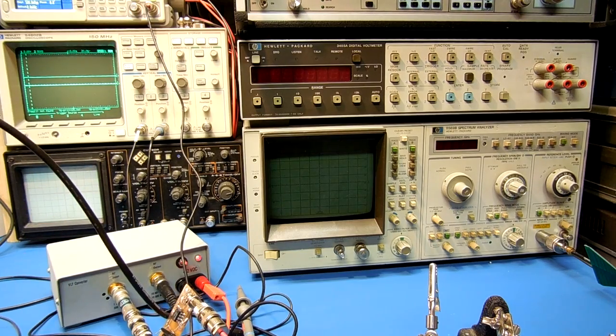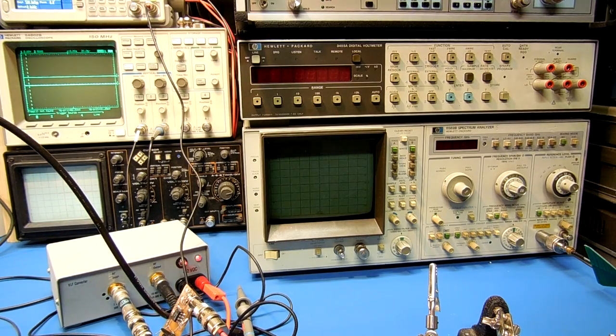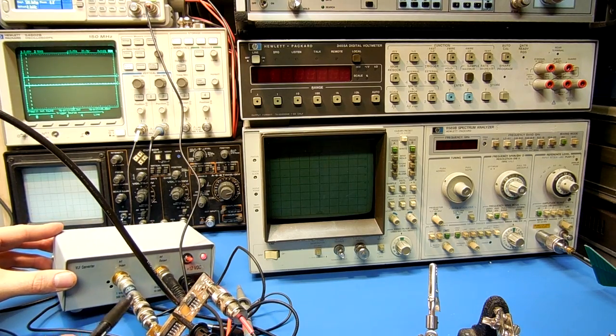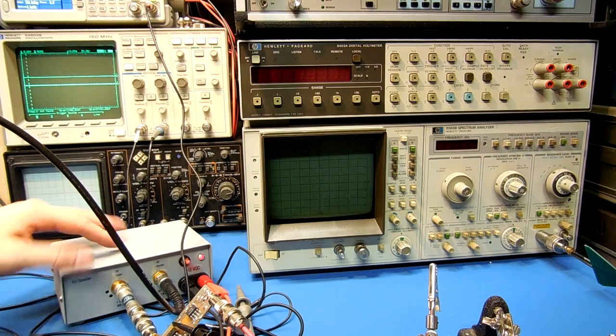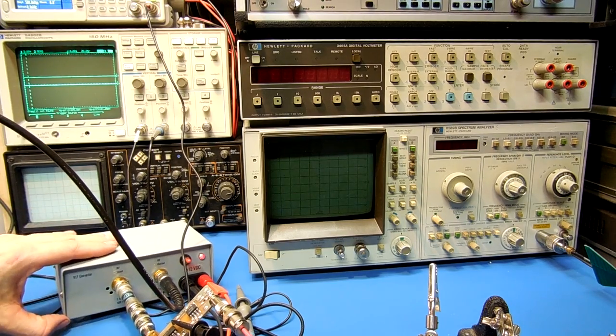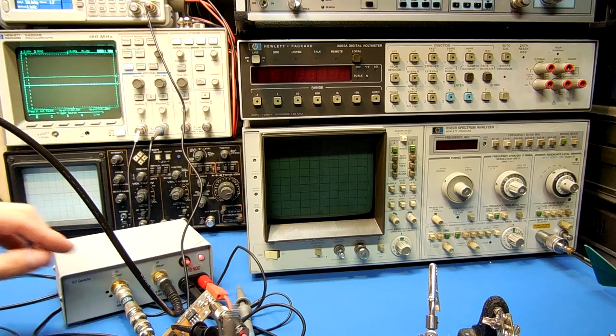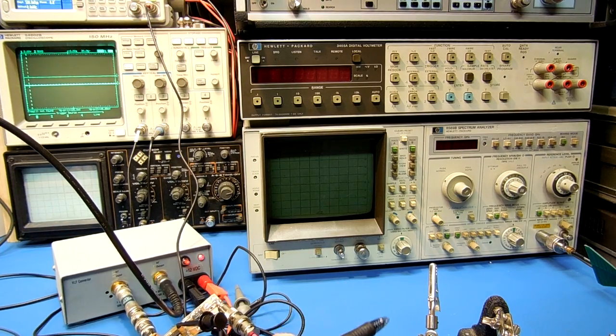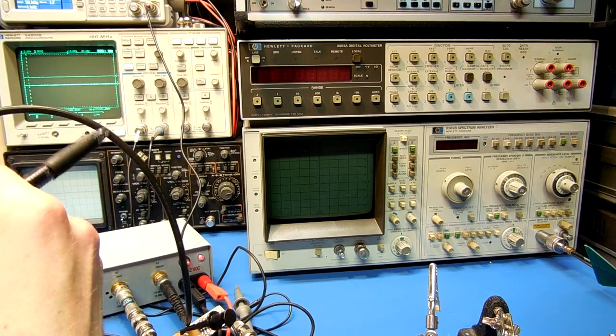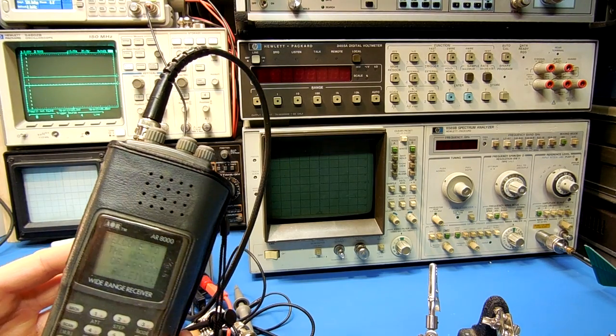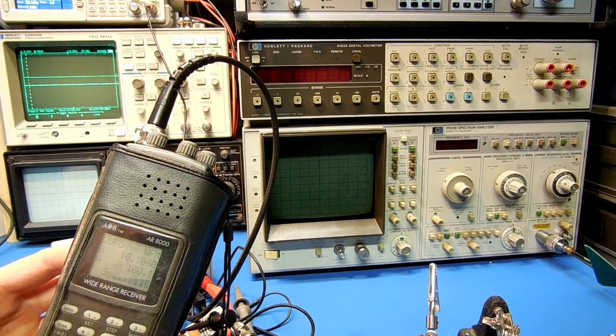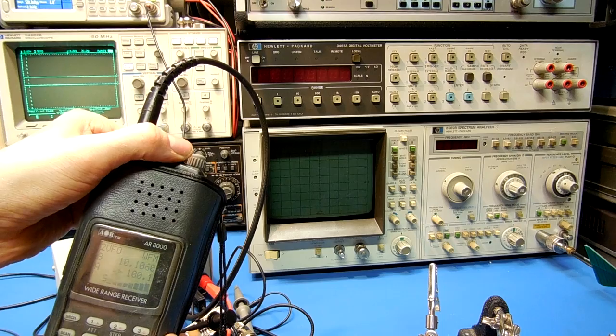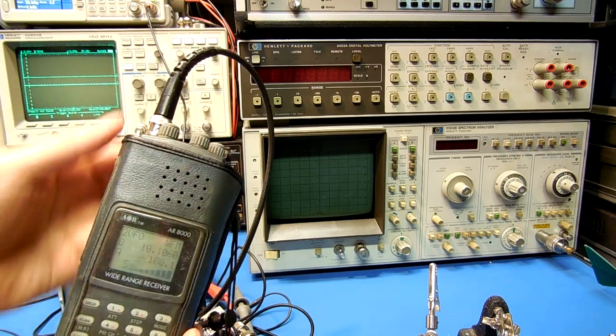I have the pulse position modulator board connected to the VLF converter through an attenuator to knock down the signal, as this is designed to operate at low power levels. I have a 1 kHz sine wave going into the modulation input. I'm going to tune the AOR 8000 to about 10.106 MHz wide FM, and you can hear the 1 kHz tone.